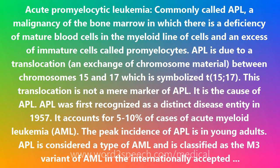The T(15;17) translocation in APL is the result of two chromosome breaks — one in chromosome 15 and the other in chromosome 17. The break in chromosome 15 disrupts the promyelocytic leukemia, PML, gene which encodes a growth-suppressing transcription factor. The break in chromosome 17 interrupts the retinoic acid receptor alpha, RARA, gene which regulates myeloid differentiation.